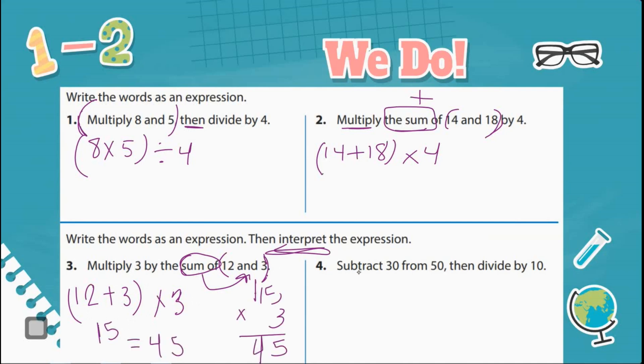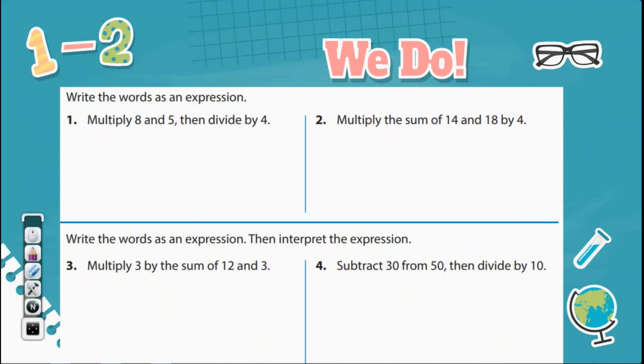Subtract 30 from what? 50. So 50 minus 30. Then divide by 10. So a lot of this goes into that following directions piece. We have to kind of do exactly what it's telling us to do here.